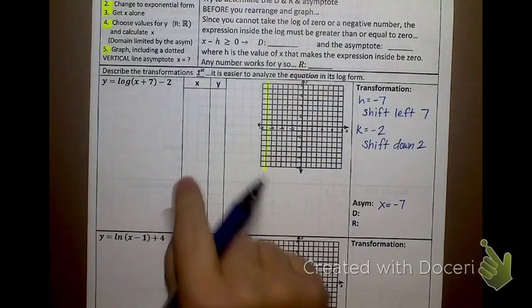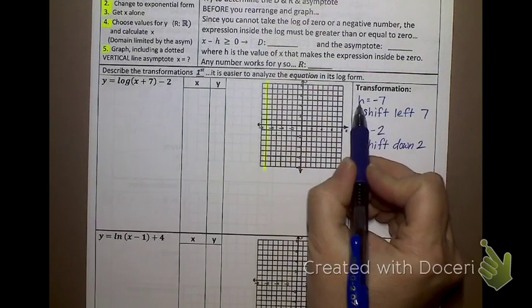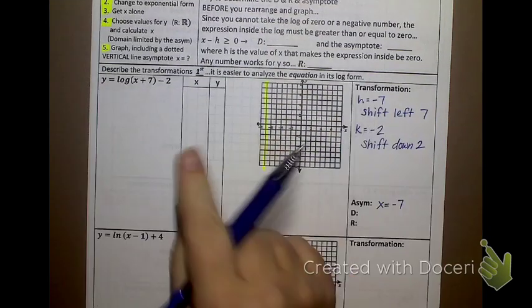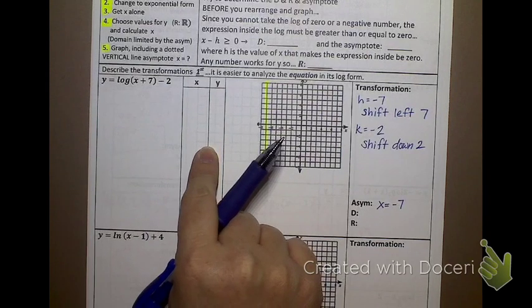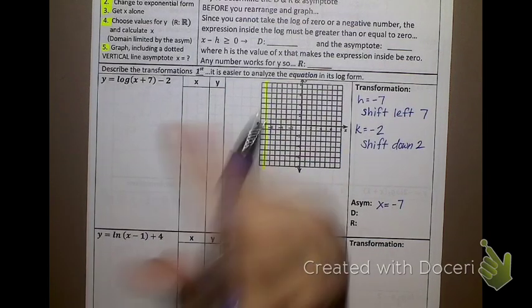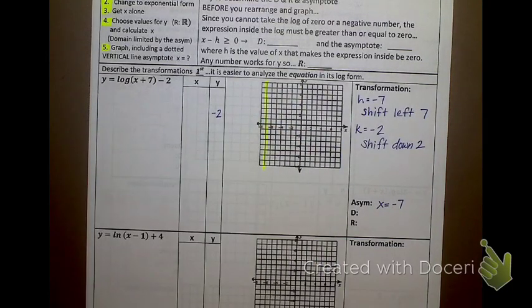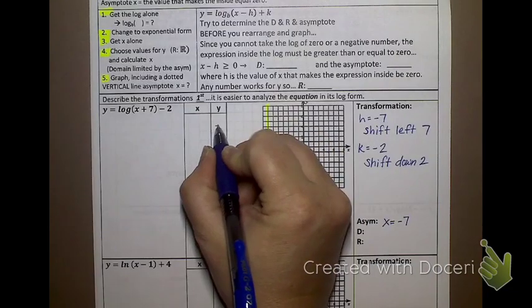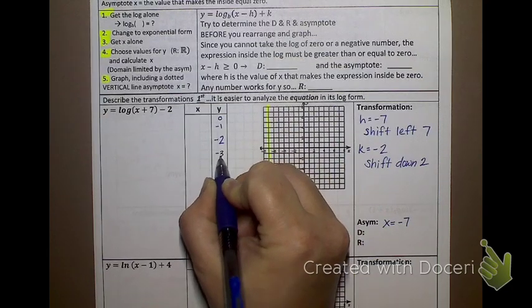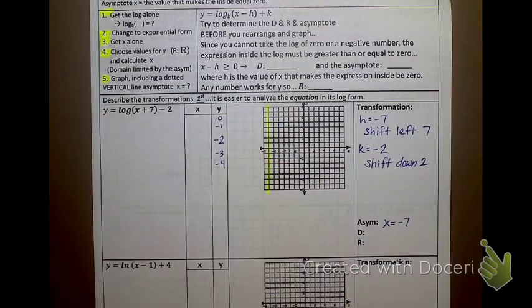Let's see. It is easiest to describe the transformation before you do any changing around of the log. Did I explain that on Friday in the video? Because once you start moving everything around, it's harder to pick out what h and k is. Where did h end up? Where did k end up? It's easier to just pick out h and k first and then move on. There is no a value to worry about. A is technically 1, which means there is no vertical change at all. It's the same as the parent function of this.